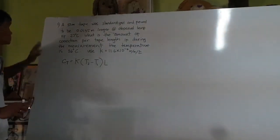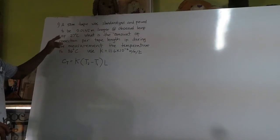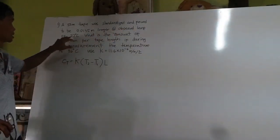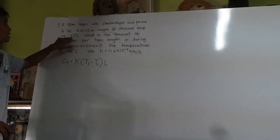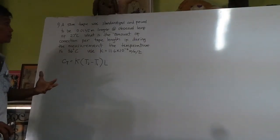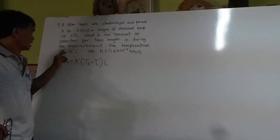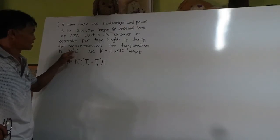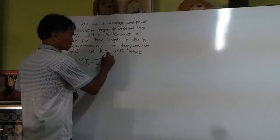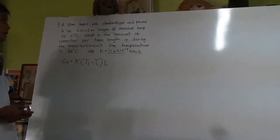We have a 50-meter tape which is standardized. It is found to be 0.0135 meters longer at an observed temperature of 27 degrees Celsius. What is the amount of correction per tape when the temperature is 36 degrees Celsius using the coefficient of expansion of the steel tape which is equivalent to 11.6 times 10 to the power of negative 6 meter per meter per degree Celsius.